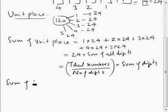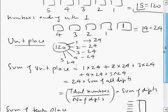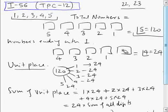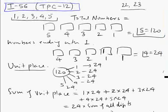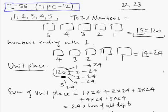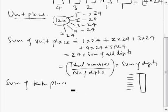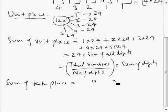Now for the tens place: by the same symmetry, the number of times digit 1 appears in the tens place is again 24, and similarly for all other digits. So the sum of the tens place values is the same quantity as the unit place sum — we just need to multiply it by its place value, which is 10.